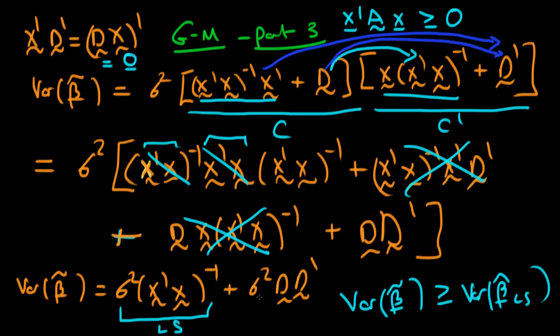In doing so we have proved that the least squares estimator for our population parameter beta is in fact the Best Linear Unbiased Estimator possible. It's the best in the sense that there are no other linear unbiased estimators which have a lower sampling variance.